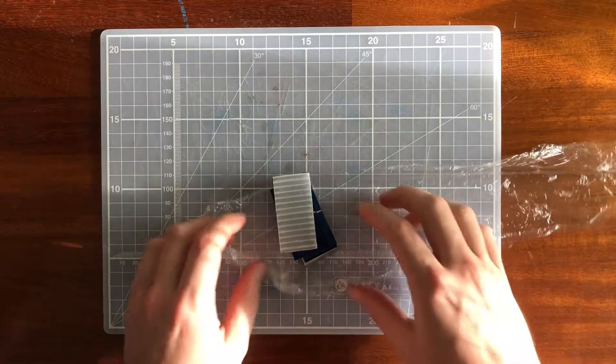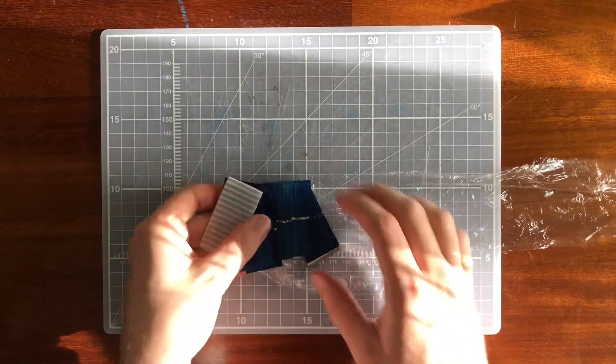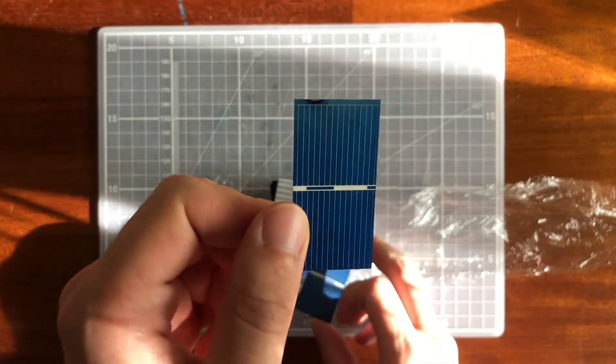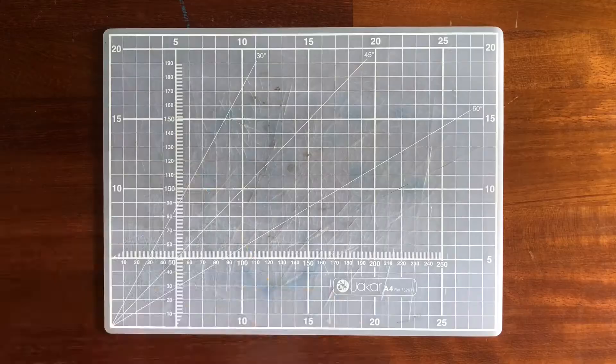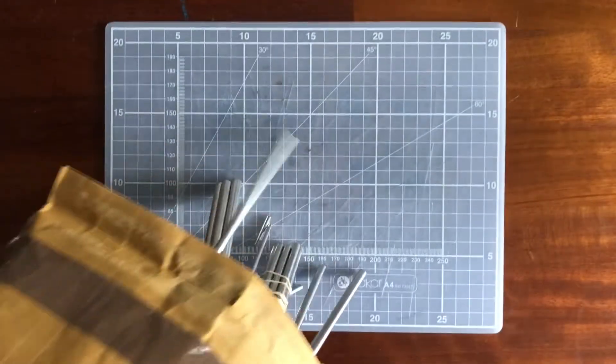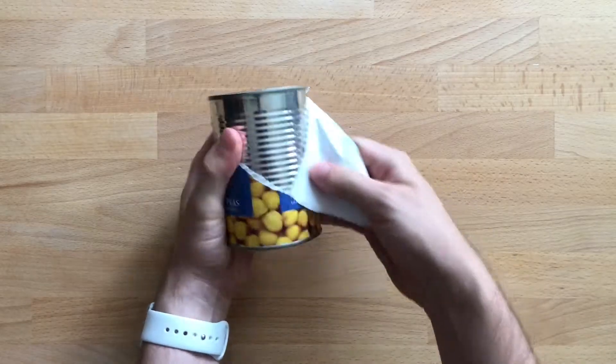A while back I ordered a load of tiny solar panels from China without a great idea of how to use them. They seem perfect for this job. The panels, a can of chickpeas from the local convenience store, and a fabulous selection of stainless steel tubes on eBay set the scale of the project.